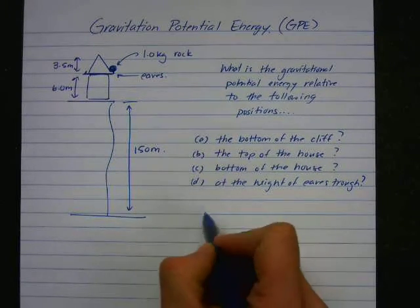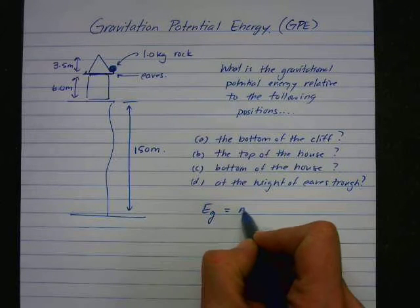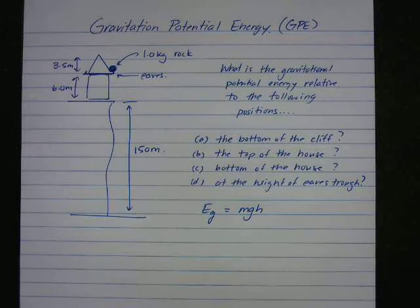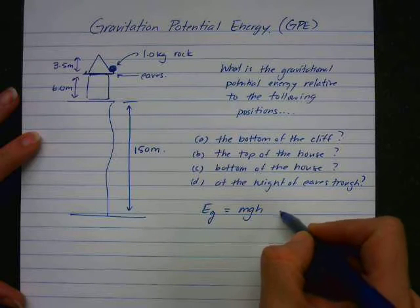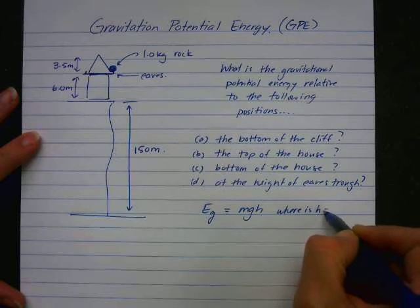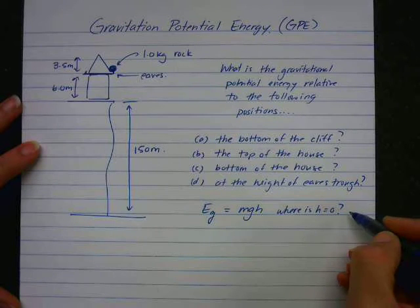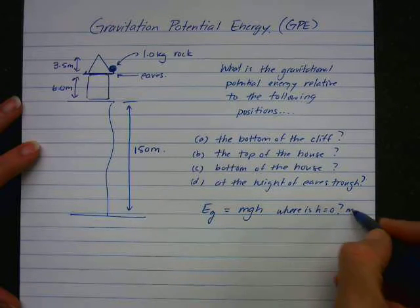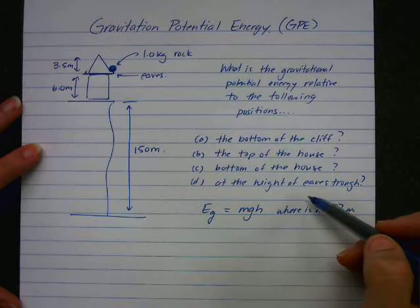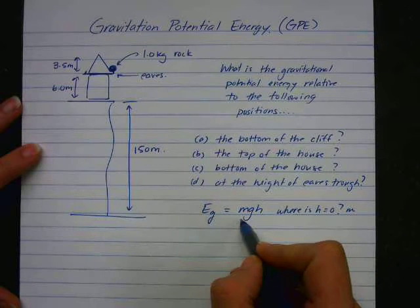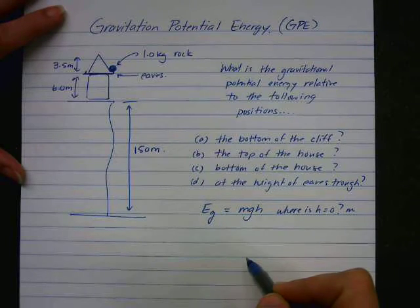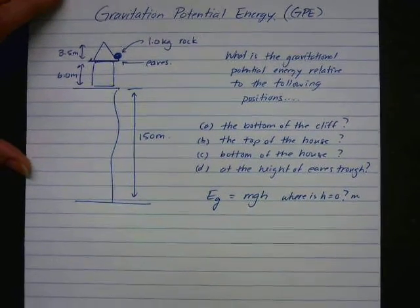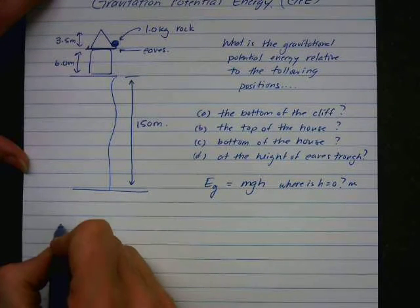So the equation for gravitational potential energy that we have is mgh. And when we use this equation, we need to have a point where h is equal to 0. And in each of these sections, that's what's changing. Because the mass of the object isn't changing. The gravitational field strength of the earth isn't changing. But h is changing. So the difference between these locations is h.